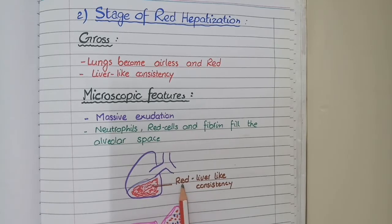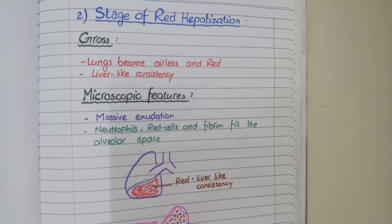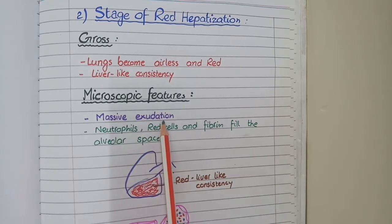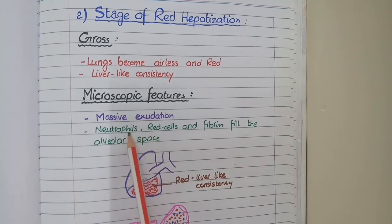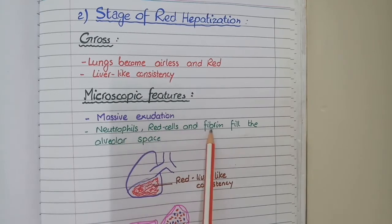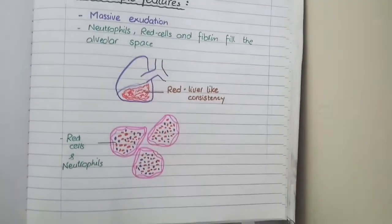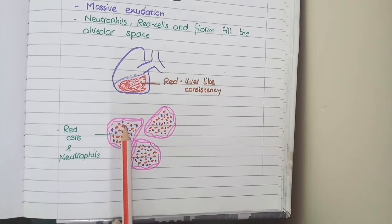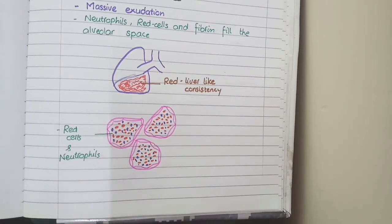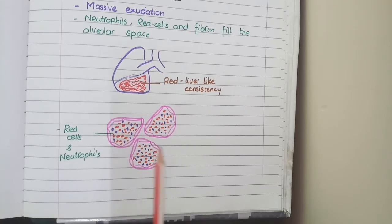So we call it the stage of red hepatization. For microscopic features, as there is massive exudation, in the alveoli you see red blood cells, neutrophils, and fibrin material. In this diagram, you can see the red circles representing red blood cells, blue nuclei representing neutrophils, and pink-colored fibrin-rich edema fluid.